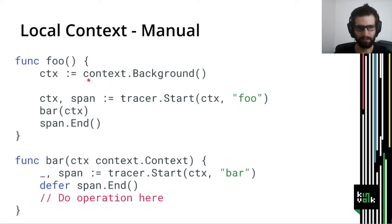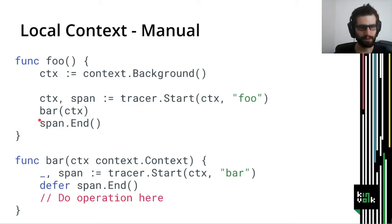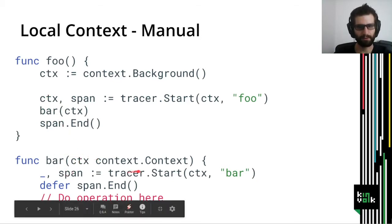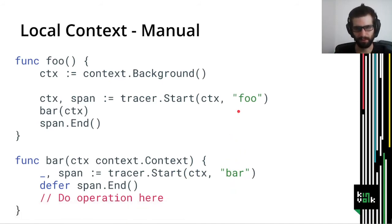In the manual local context example, we have two operations: foo and bar. In the foo operation we create an instance of the context, and when we start a span we pass the context to that function, which returns a new context containing the foo span as active. We then pass that context to the bar operation. When the bar span is created, the implementation understands that the context has foo as the active span, so bar is set as the child of foo, allowing us to reconstruct the full trace.